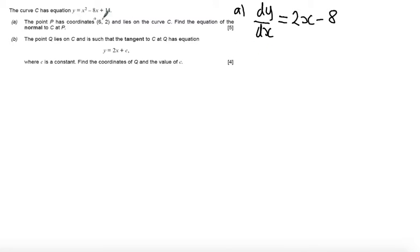Then looking at my coordinates, which I want to find the gradient, x equals 6. So I get dy by dx is 2 lots of 6 minus 8, which gives me 12 minus 8, which gives me a gradient at the point of 4.